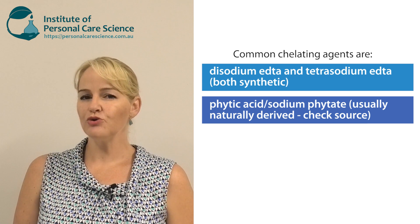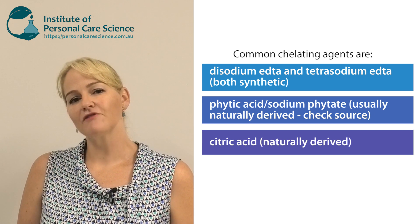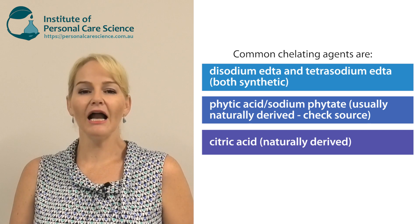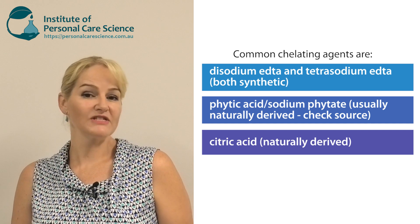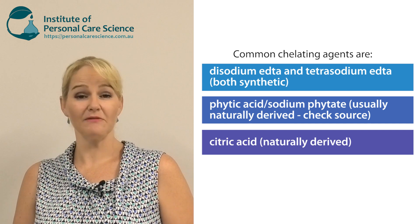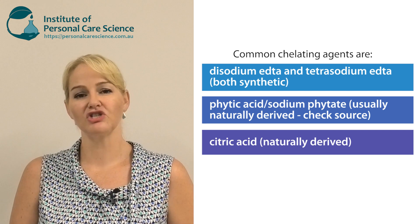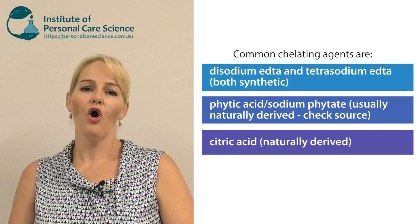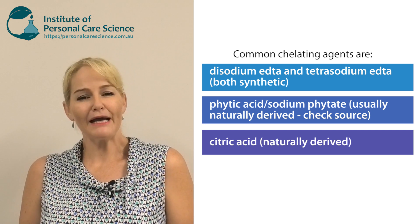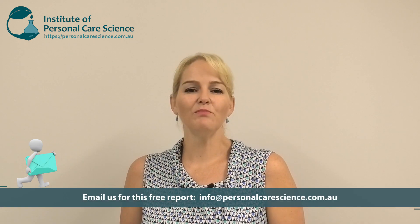Finally, there is another chelating agent commonly used in formulas, but it's usually not present in sufficient amounts — and that is citric acid. Small amounts of citric acid for pH adjustment can sometimes counter color changes from acid-based preservatives, but just be aware we're often not using enough citric acid in pH adjustment to provide a strong chelating benefit — to help protect against oxidative changes, to boost preservative efficacy, or to work in more challenging formulas.